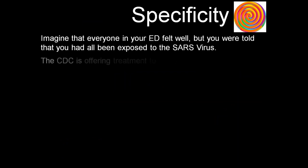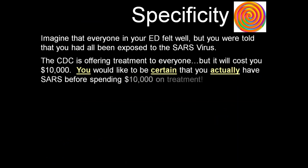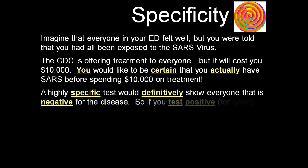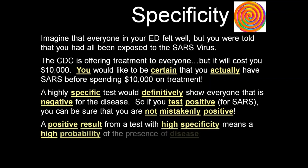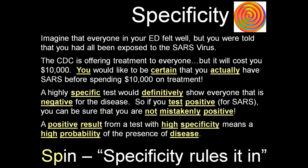Specificity: imagine everyone in your department felt well but you were told you'd all been exposed to the SARS virus. The CDC is offering treatment, but it will cost $10,000. You would like to be certain you actually had SARS before spending $10,000 on treatment. A highly specific test would definitively show everyone negative for the disease. So if you test positive for SARS, you can be certain you are not mistakenly positive. A positive result from a test with high specificity means a high probability of the presence of disease. SpPin — specificity rules it in.